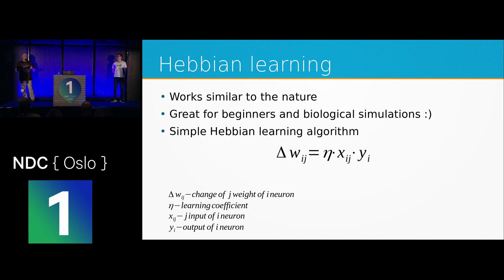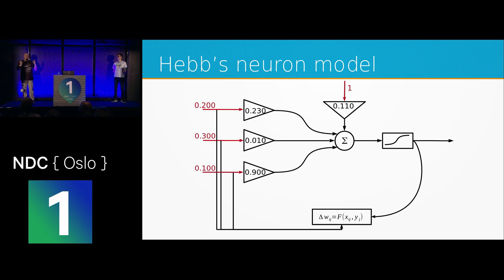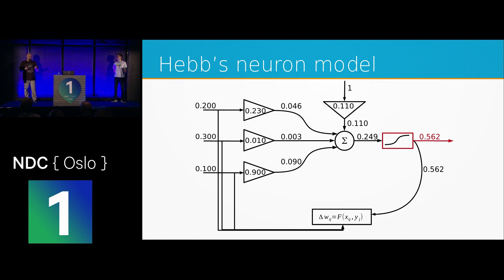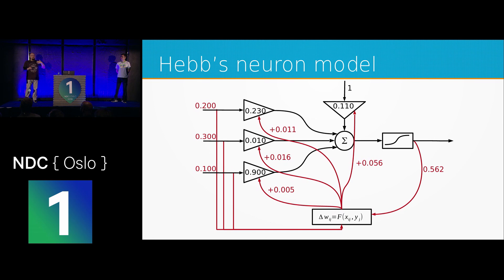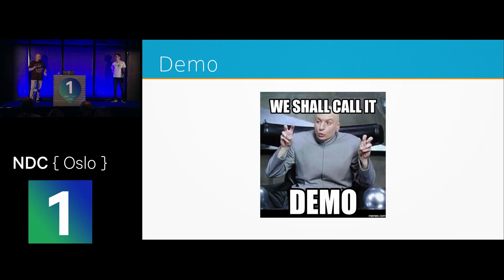The neuron is the same as before, except there's a module that adjusts the weights using the Hebbian learning algorithm. When learning: the signal comes, we add the bias, multiply weights times inputs, sum the partial sums, put them into the activation function, then use the input and output of the activation function to create weight changes, and apply them. The neuron is then ready for the next example with its new weights.